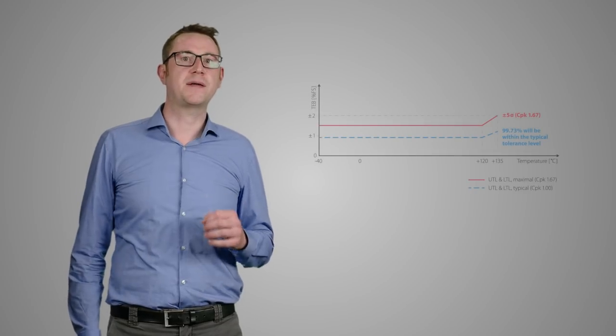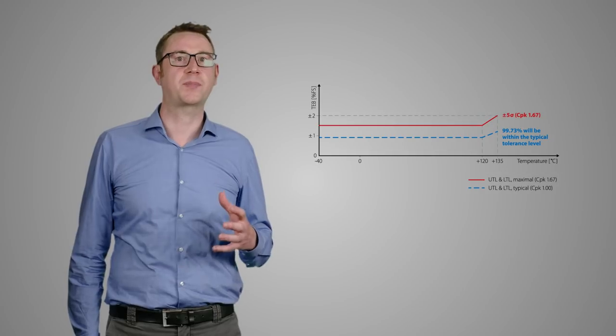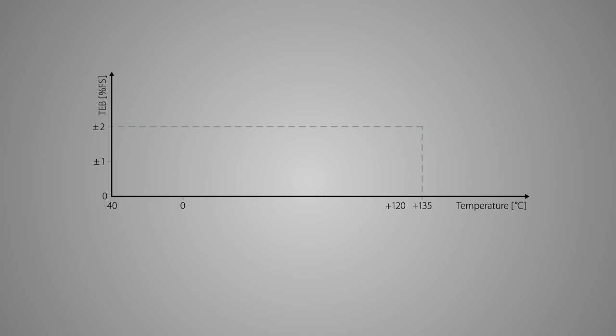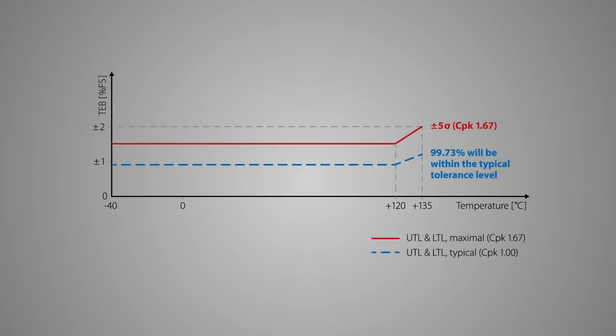In this example, we have a total error band for an exhaust gas back pressure application on an industrial diesel engine. In our datasheet, we indicate both the maximum and the typical value. The red line indicates our total error band here at 1.5% corresponding to 5 sigma limits and CPK of 1.67.